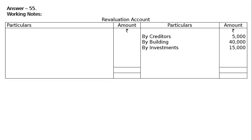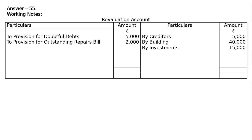A provision of rupees 2,000 was made for an outstanding bill for repairs — increase in liability. Also, unrecorded liability towards suppliers of rupees 3,000 — increase in liability. Credit outstanding repairs rupees 2,000 and credit suppliers or creditors rupees 3,000. Now the credit side is higher than the debit side — total the credit side, write it on the debit side, and find out the gap.